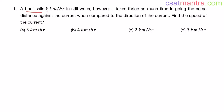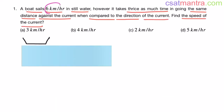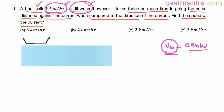A boat sails 6 km per hour in still water. It takes thrice as much time going the same distance against the current when compared to going in the direction of the current. Find the speed of the current. The boat's velocity is 6 km per hour — this is the pure velocity, not influenced by any medium, air or water. So water is not influencing the boat here.